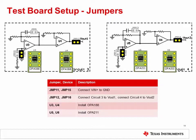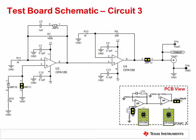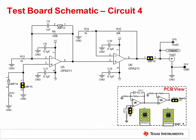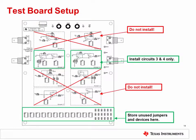On circuit 3, install JMP11 and JMP12, as well as the OPA188 in sockets U3 and U4. On circuit 4, install JMP15 and JMP16, as well as the OPA211 in sockets U5 and U6. This gives the full schematic for circuit 3, which you will use to measure the total output noise of the OPA188, and circuit 4, which you will use to measure the total output noise of the OPA211. It is important that you only install jumpers and devices in circuits 3 and 4; do not install any jumpers or devices in any other circuits on the PCB. Remove any jumpers or devices from the unused circuits and store them in the storage area at the bottom of the test board.